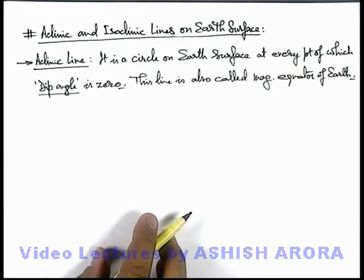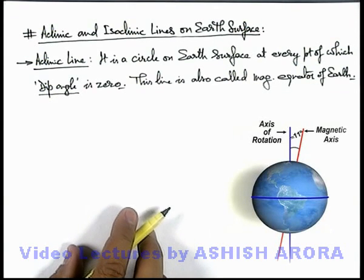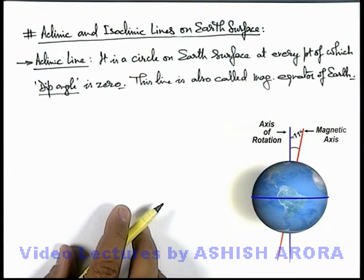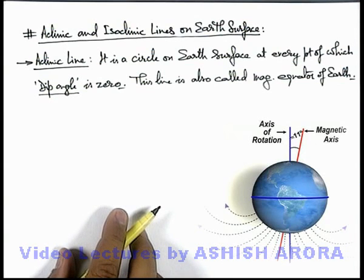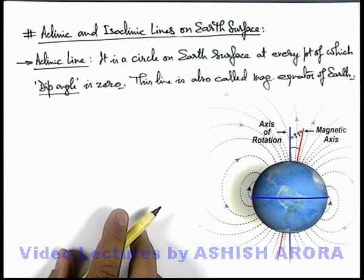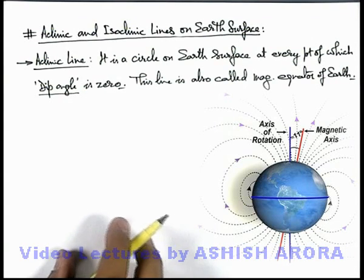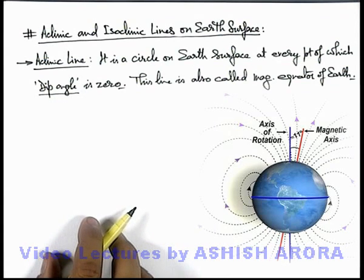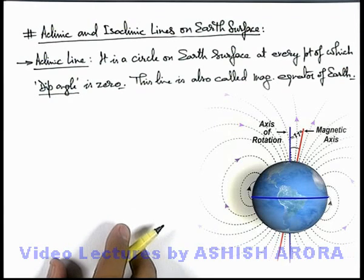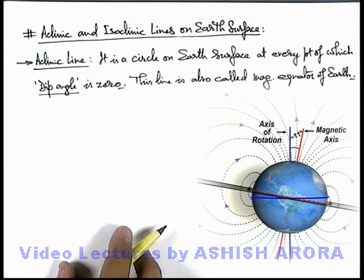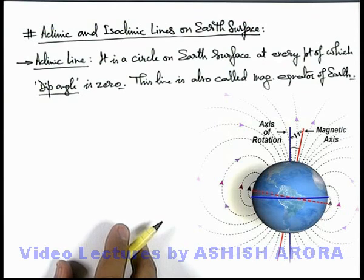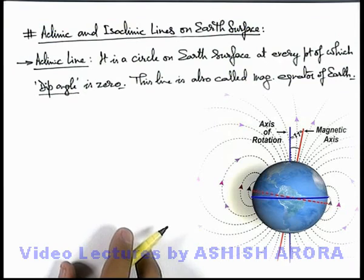We can visualize this by looking at this picture. This is the earth with its rotational axis and magnetic axis, which are inclined at approximately 11 degrees. The earth's magnetic field exists such that from near the geographic south pole, where the magnetic north pole exists, magnetic lines come out and go into the earth's surface at the magnetic south pole, which is close to the geographic north pole. The circle inclined at approximately 11 degrees toward the equatorial plane is where earth's magnetic field is parallel to the earth's surface, meaning the dip angle at every point of this circle is zero — so this line is termed the aclinic line.